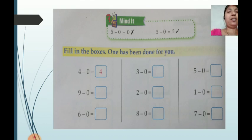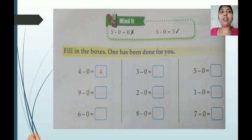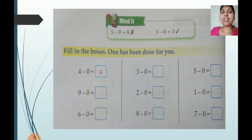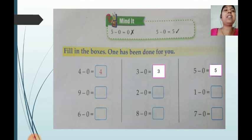See the exercise below: fill in the boxes. One example has been done for you: 4 minus 0 equals 4, because when we subtract 0 from any number, the answer is the number itself. Similarly, 3 minus 0 equals 3, and 5 minus 0 equals 5. The remaining examples are your homework — it is very easy, you can solve them properly.